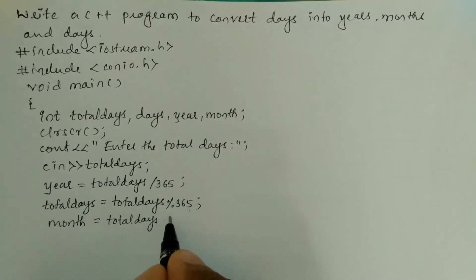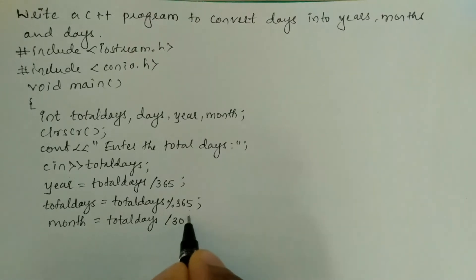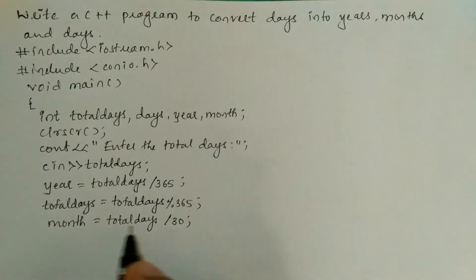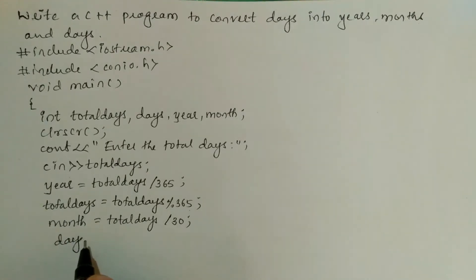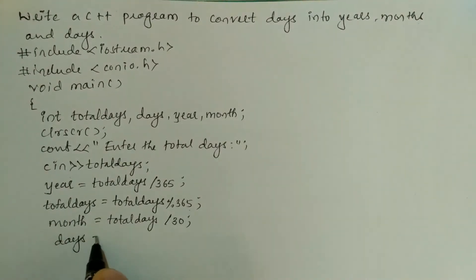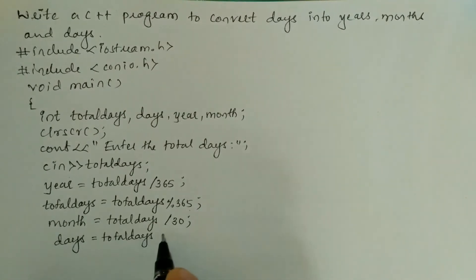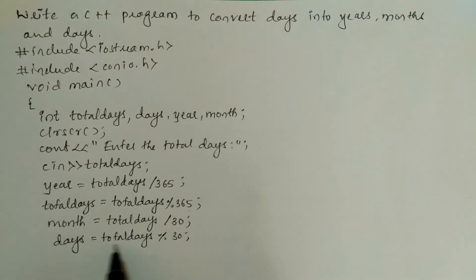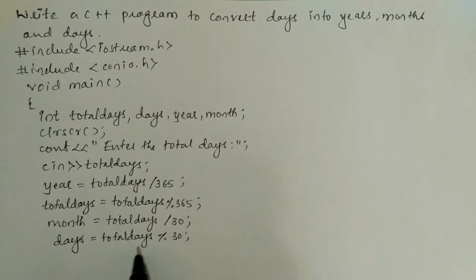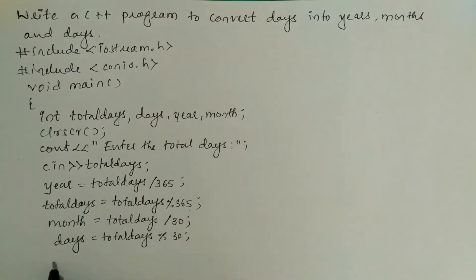Now we calculate months: month = total_days / 30; because in a month we have 30 days. Next we calculate the remaining days: days = total_days % 30; Modular division by 30 gives us the remainder, which are the remaining days.